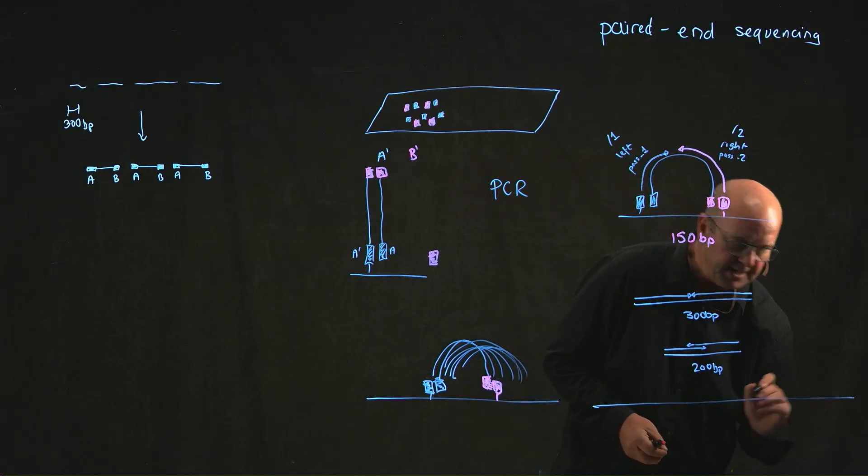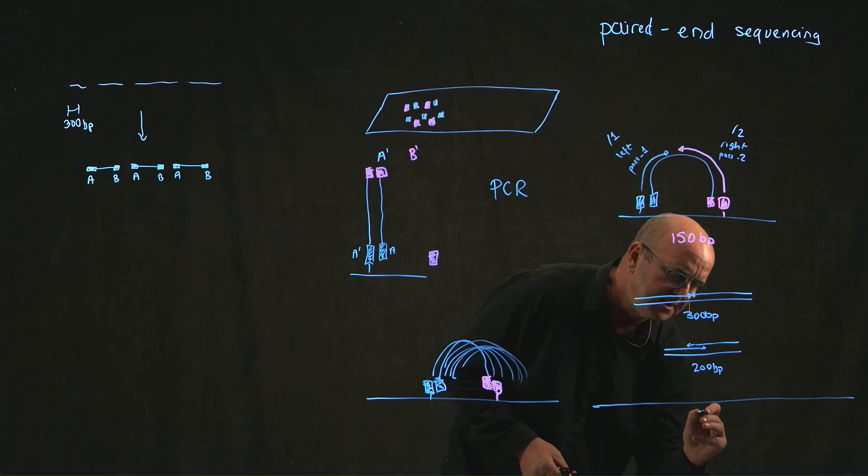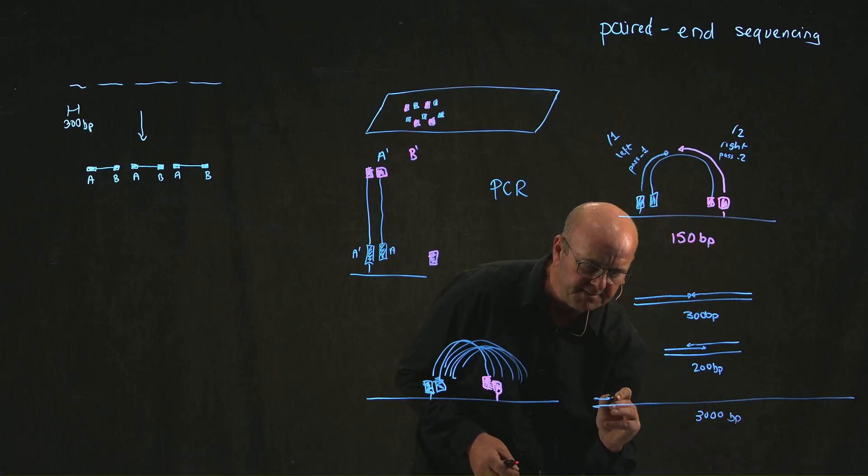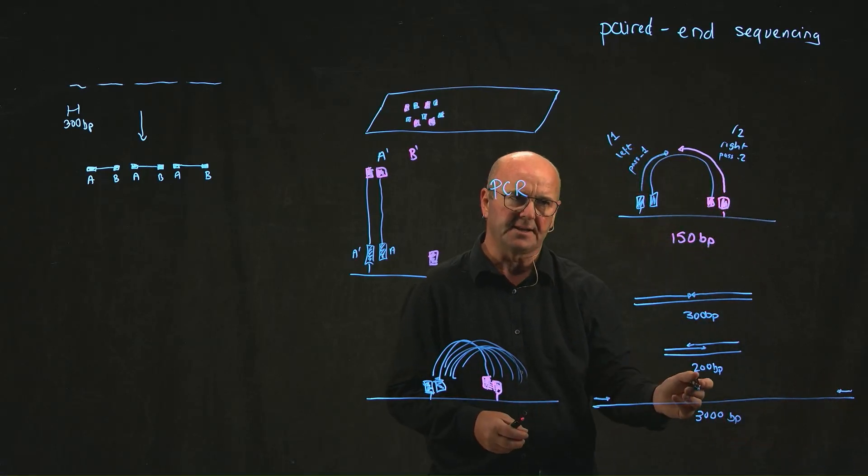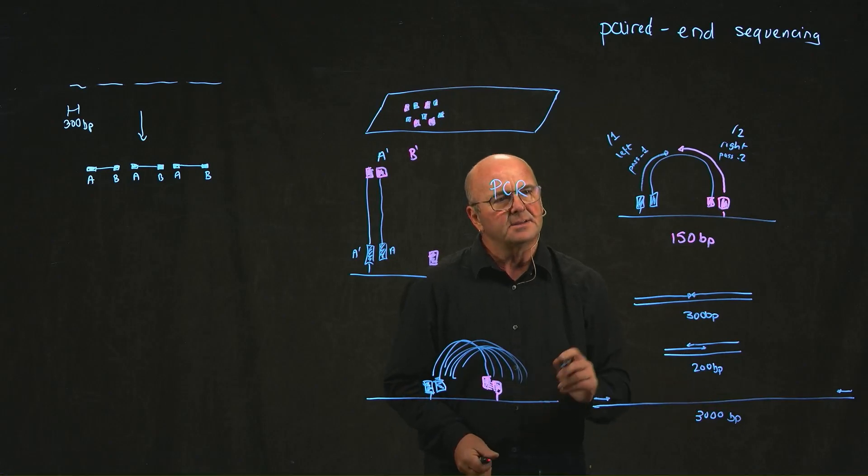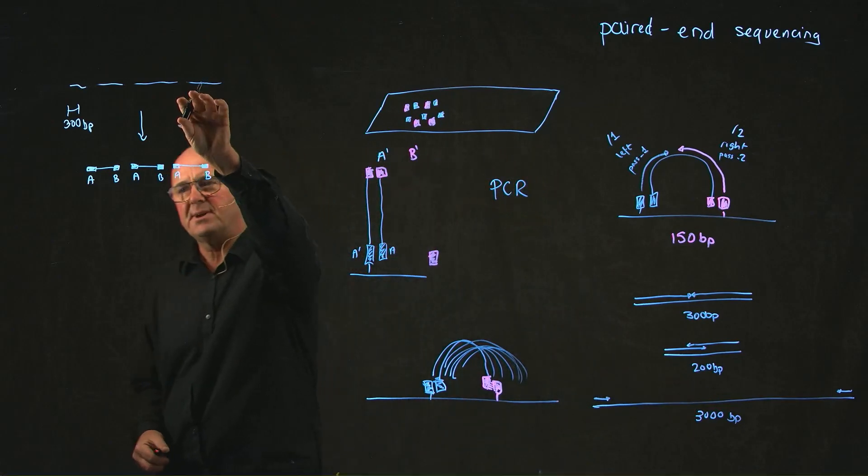Alternatively, if we increase our fragment size to say 300 base pairs and we read 150 bases from this end and 150 bases from this end, we'll never get any overlap. And so we can dial in how big our fragments are depending on how much overlap we want to get.